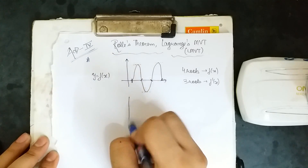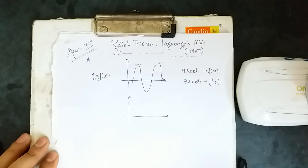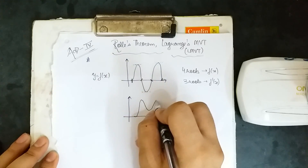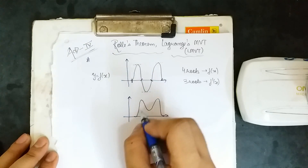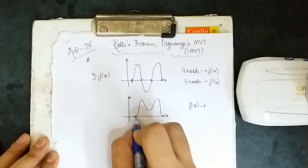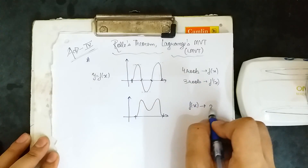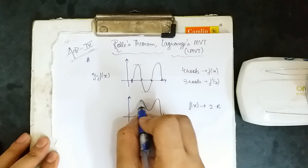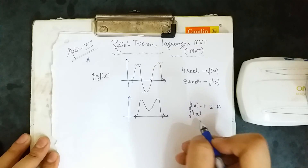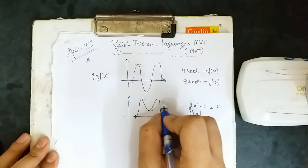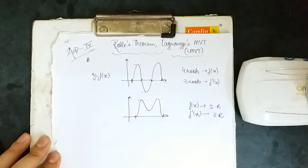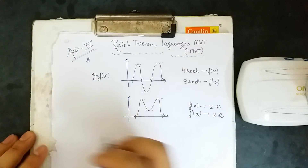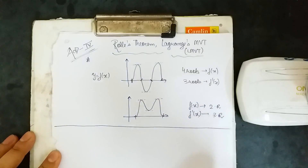Now let me deal with another example. If I have a graph which touches at a certain point, how many roots does f(x) have? 1 and 2 — so 2 roots. If I take the graph of f'(x), I will see that it becomes 0 at 3 points, so f'(x) will have 3 roots. The thing to be clear in your mind is: if f'(x) has n−1 roots, it does NOT imply that f(x) has n roots.